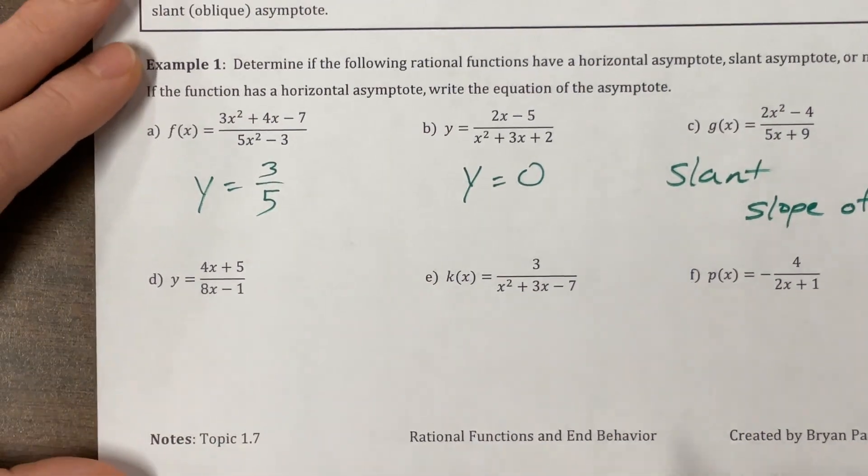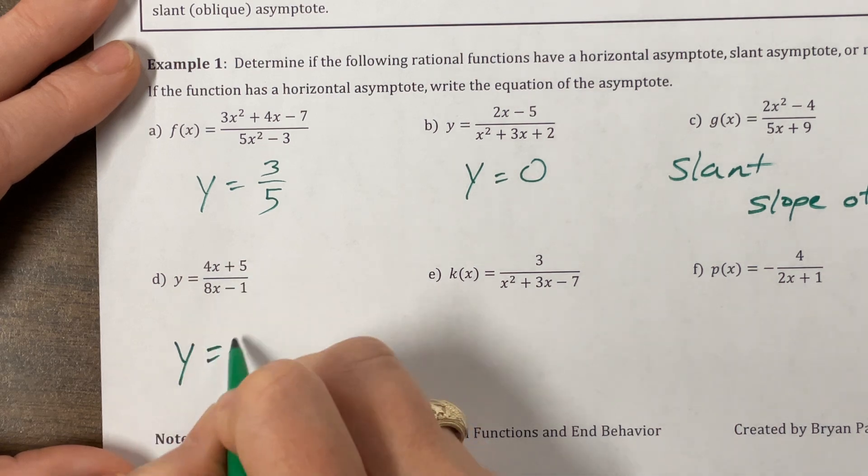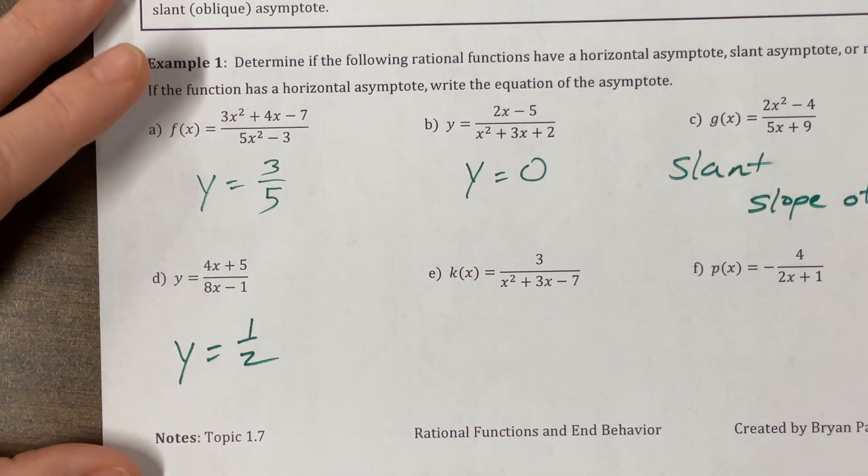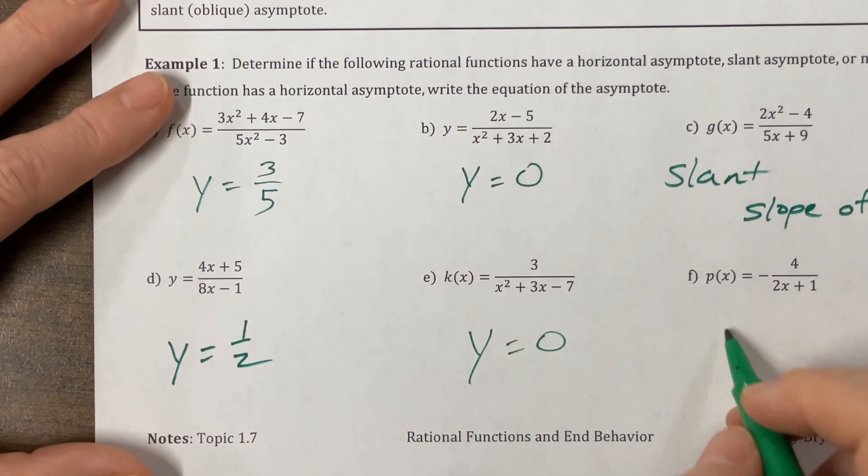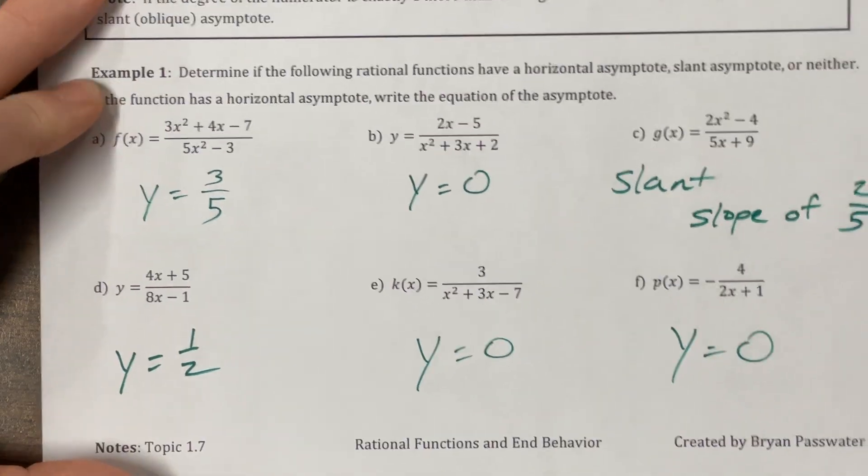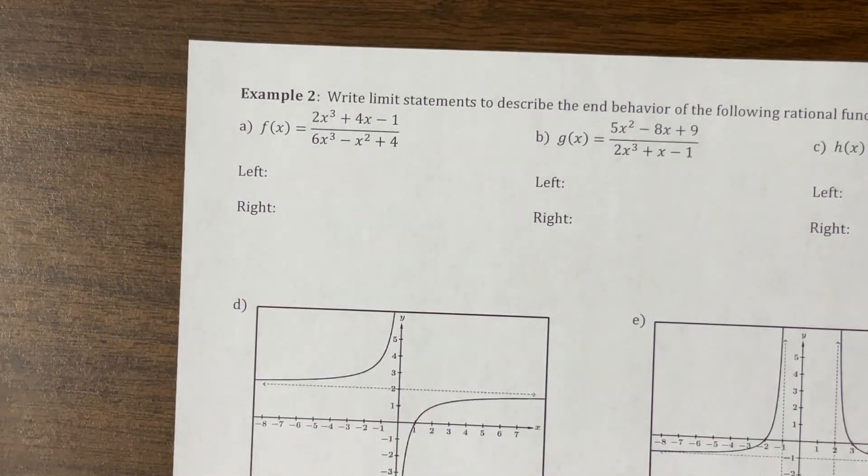Okay. The next one, same degree. So we have an asymptote four over eight reduces to one over two. So it's y equals, that's a horizontal asymptote. This is bottom heavy, y equals zero. This one is bottom heavy, y equals zero. Those are fun. Okay. Let's keep going.